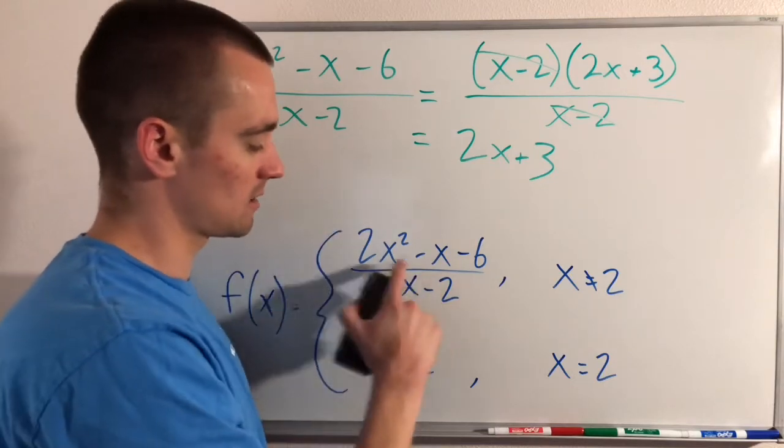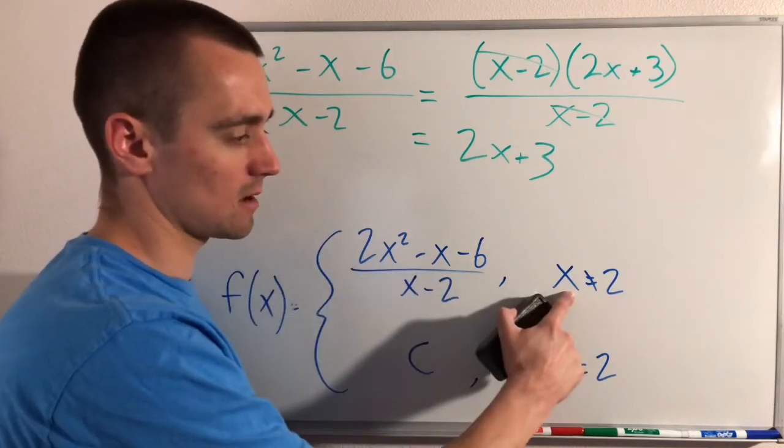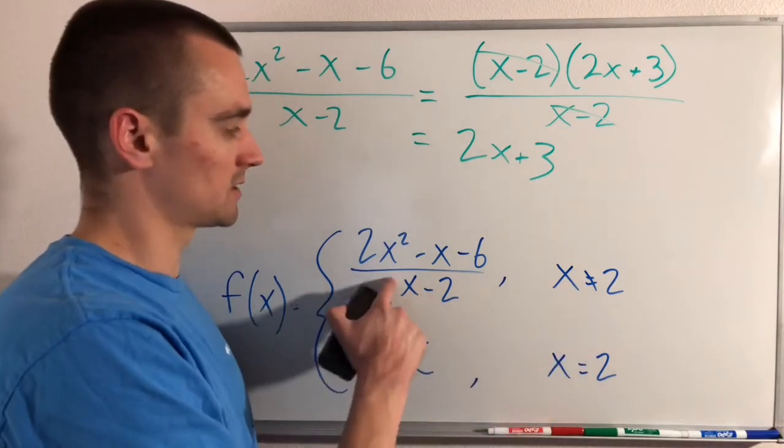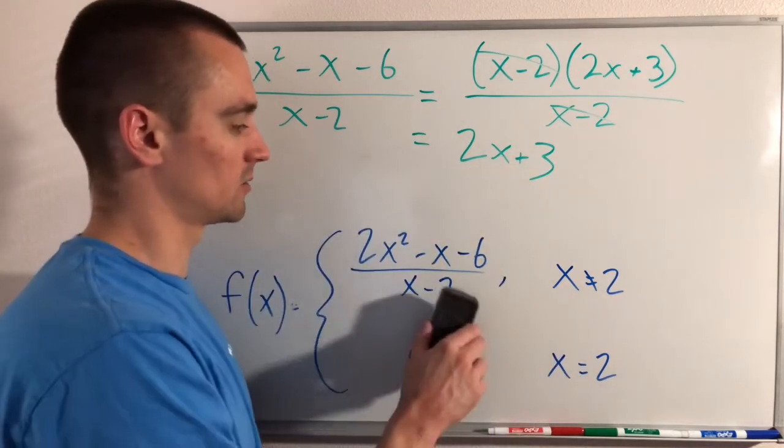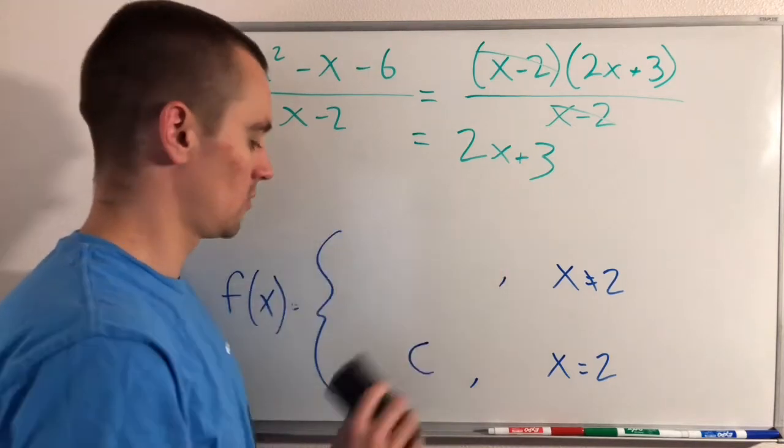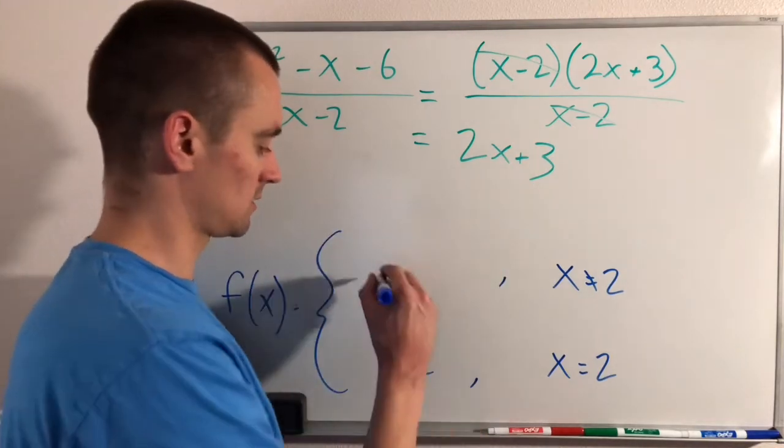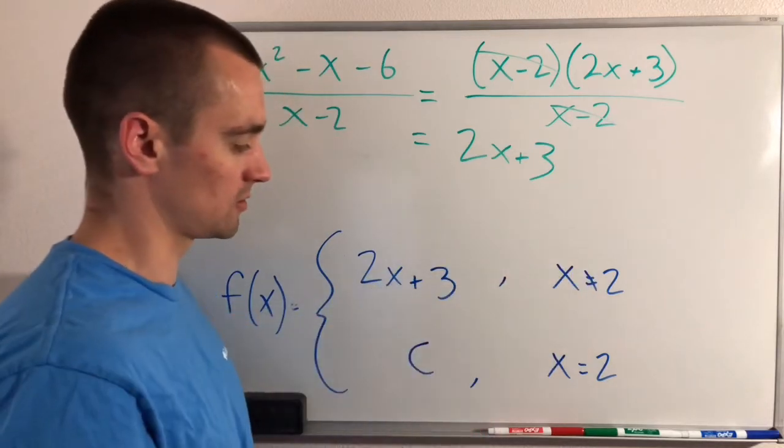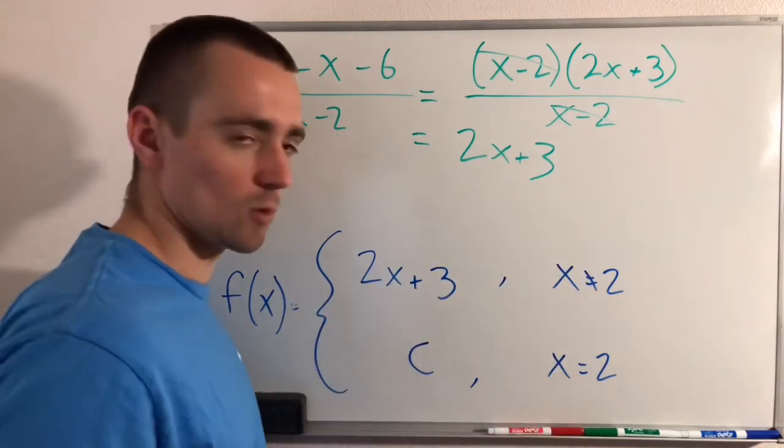But since we're not defining our function by this piece at x equals 2, it's only x's that are not 2, this will actually be equivalent to that. So instead, we can think of our piecewise function as 2x plus 3 for all x's that are not 2, and then this constant c when x equals 2.